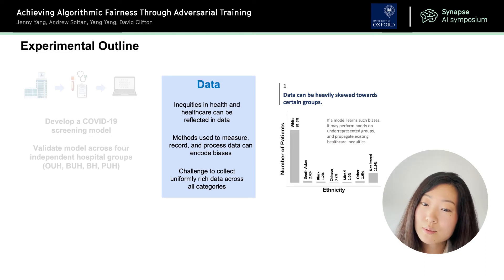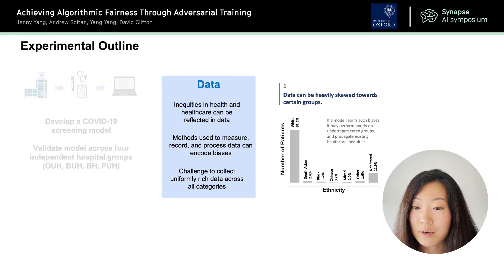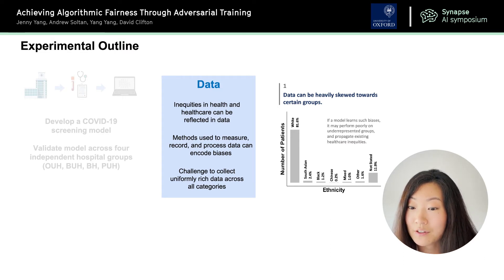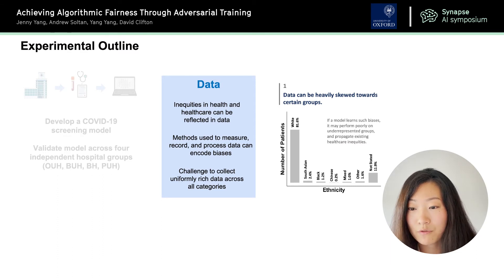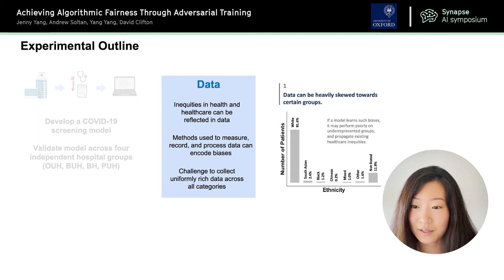When we plot our data, we can tell that our data is heavily skewed towards certain groups. For example, with respect to ethnicity, you can see we have a much higher number of white patients than any other demographic, and if a model learns these biases, it may perform poorly on underrepresented groups and also propagate existing healthcare inequities.